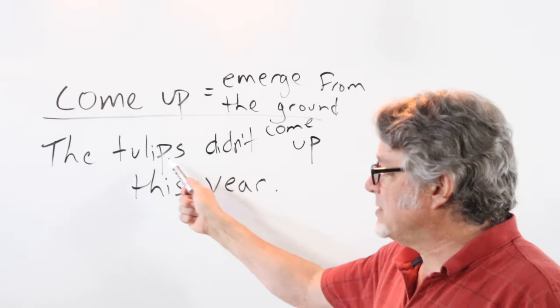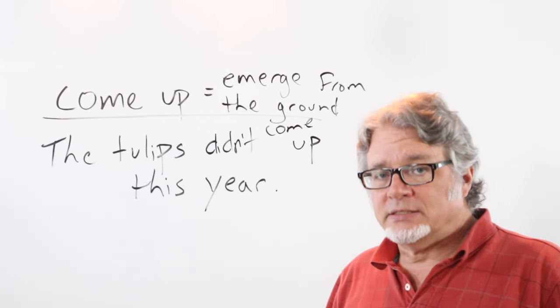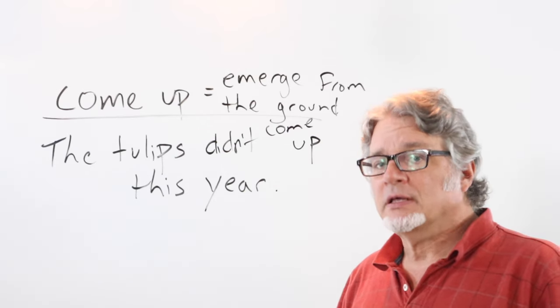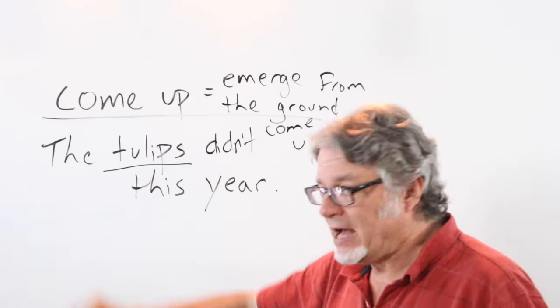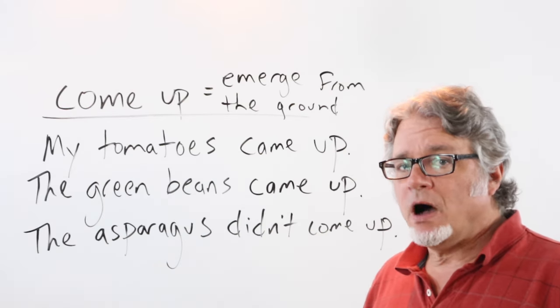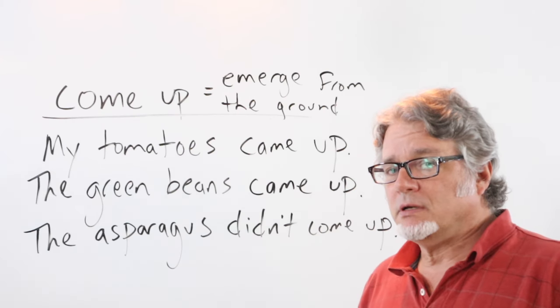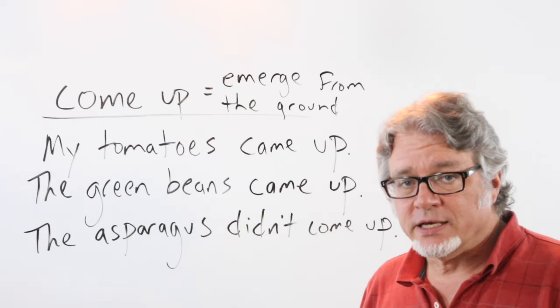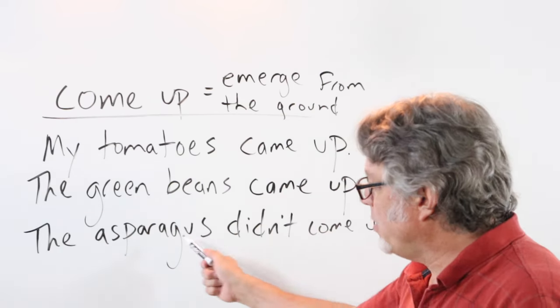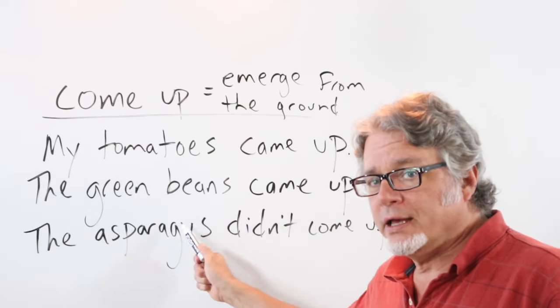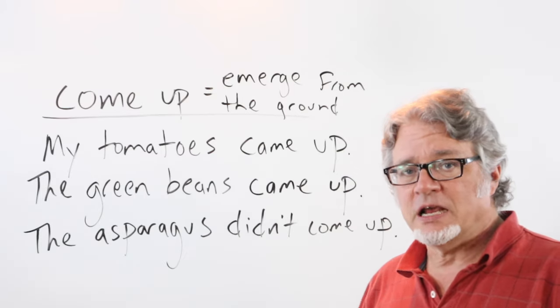If you're expecting a particular plant to emerge from the ground and it doesn't come up, then you can say something like this. My tomatoes came up, the green beans came up, but the asparagus didn't come up. Something was wrong with the plant and it never emerged from the ground. It never came up.